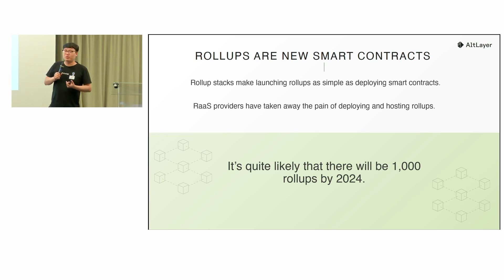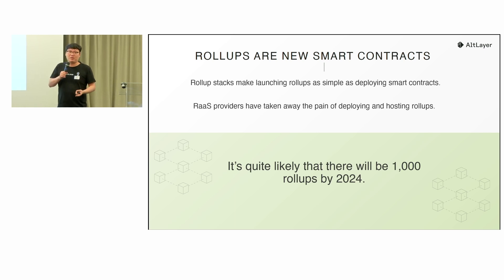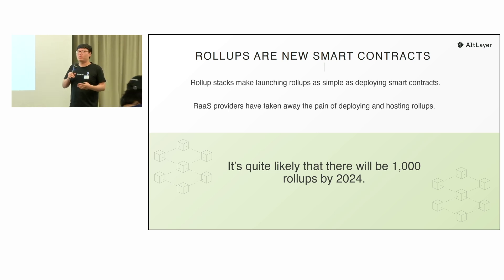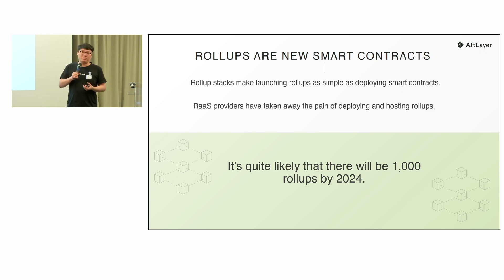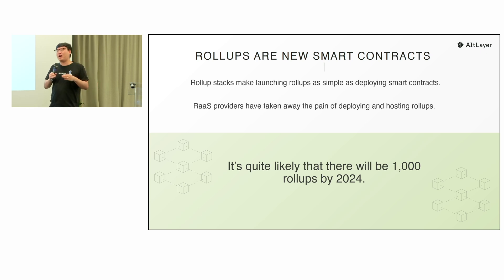For the past two to three years, most of the rollup stacks are quite mature. For applications on DeFi, social, or gaming, if they want to launch a rollup, they can directly reach out to providers like us and quickly launch rollups within a few minutes, within a bunch of clicks. It's becoming a commodity to launch a rollup — sometimes even faster than deploying smart contracts on Ethereum or other L1s and L2s. By the end of this year, we could really have a thousand rollups.